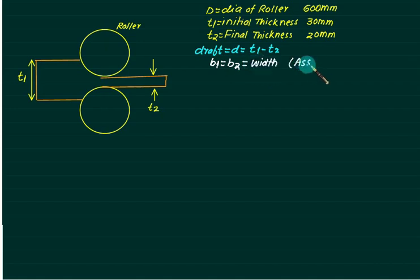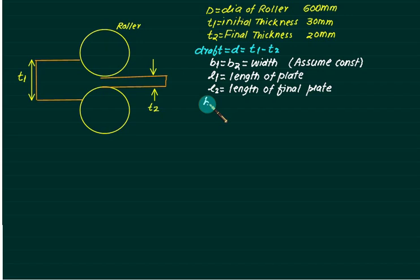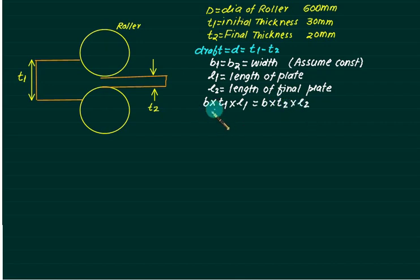Assuming width is constant: if L1 is the original length of the plate and L2 is the length of the final product, then there is no change in volume, as seen previously. So the cross-section gives B × T1 × L1 = B × T2 × L2. Since B is constant, we can say T1 × L1 = T2 × L2.